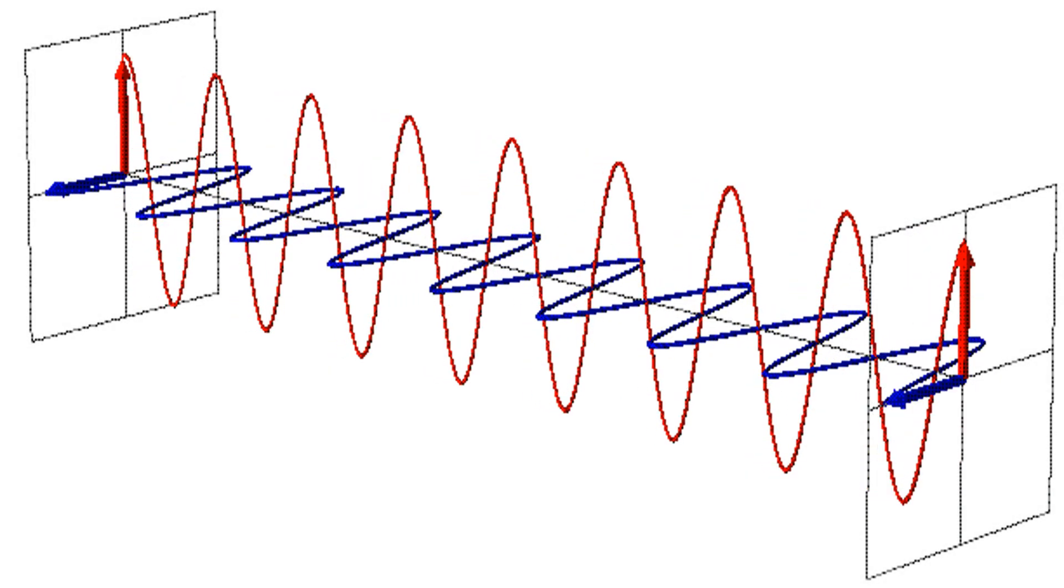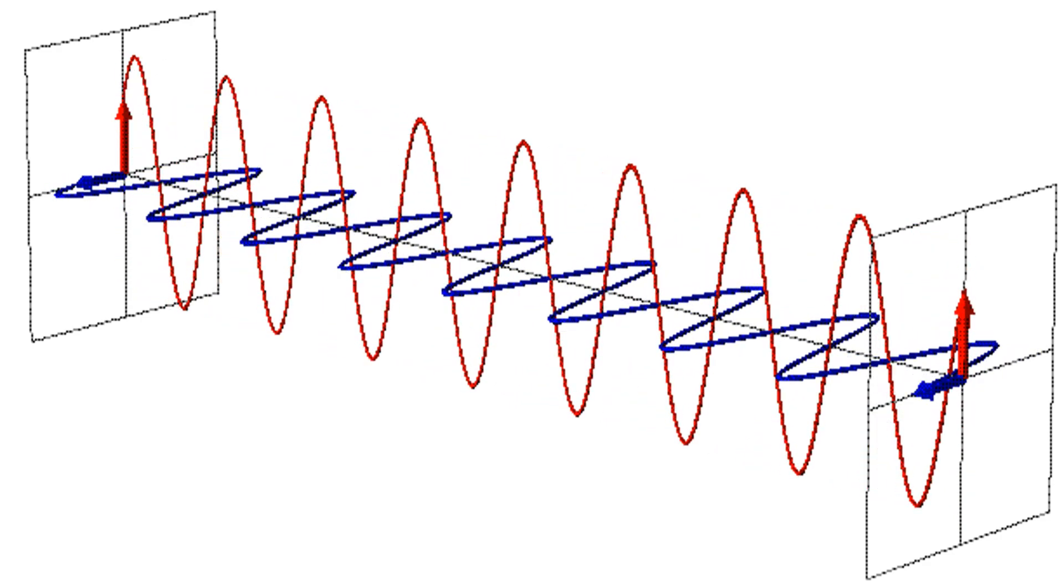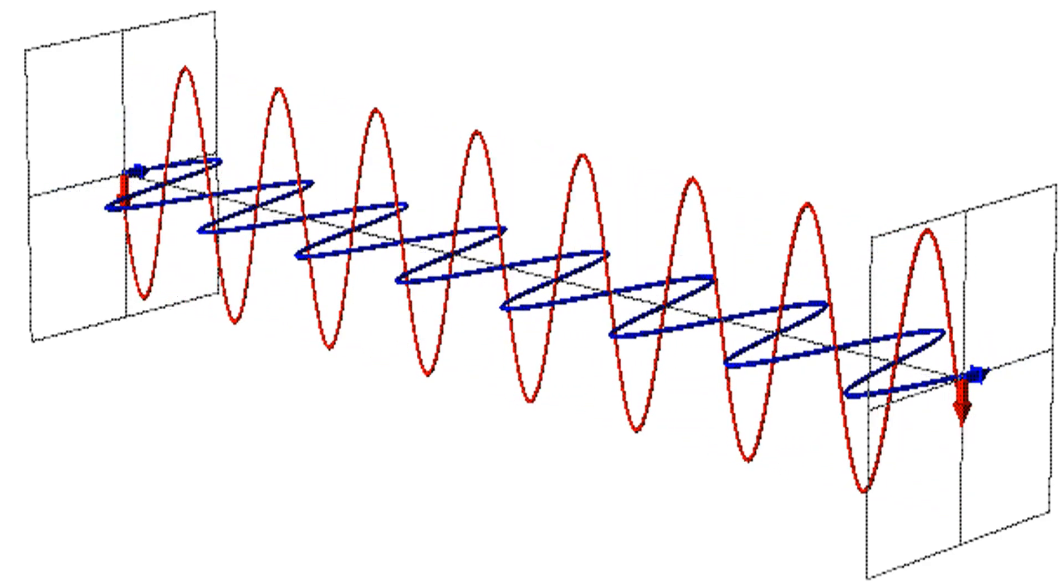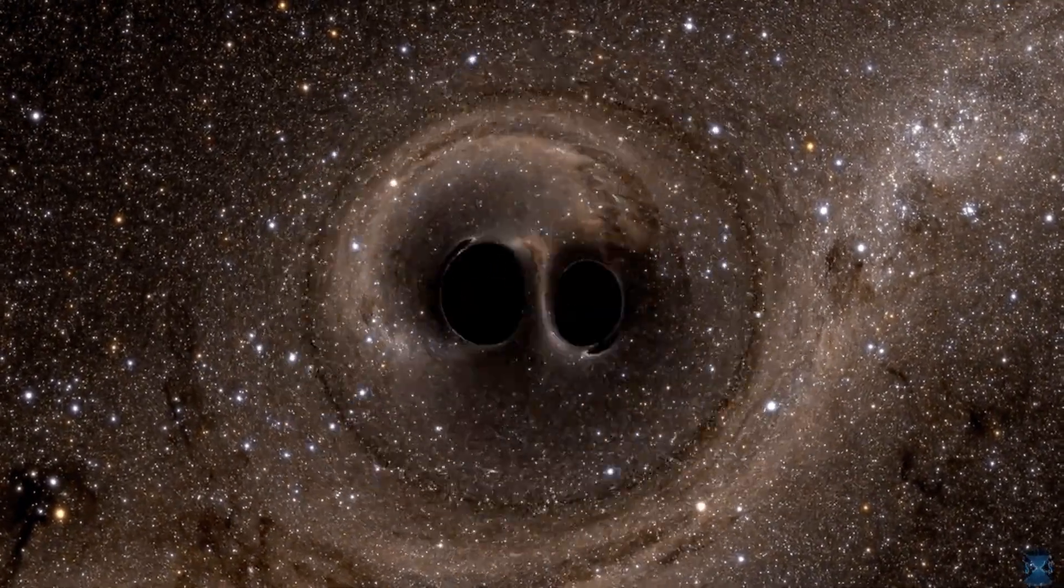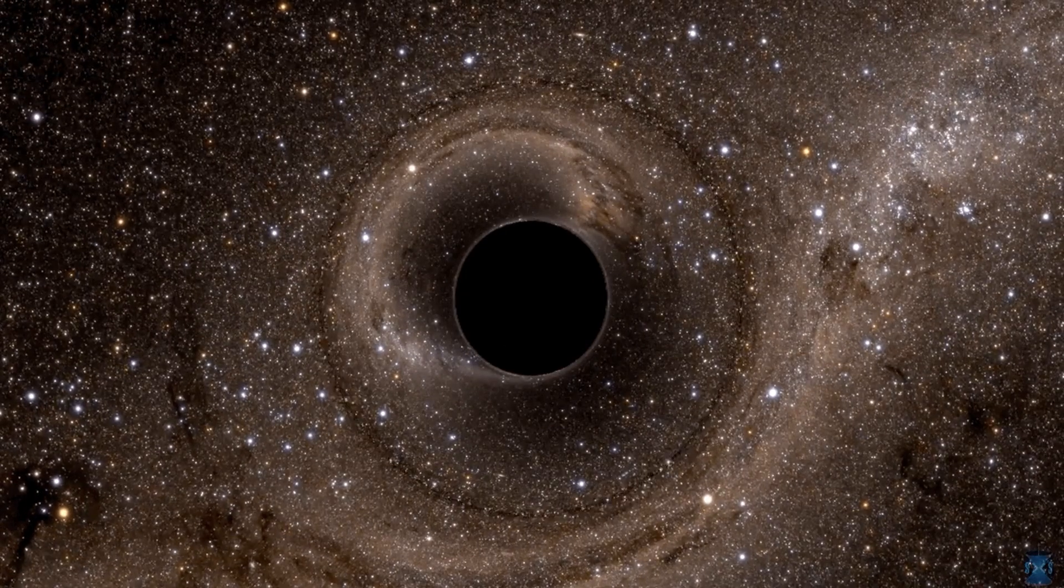Now that we understand what gravitoelectric and gravitomagnetic fields are, and how they resemble electric and magnetic fields, let's talk about gravitational waves. General relativity shows that gravitational waves travel at the speed of light, c. And we see this speed in the Maxwell's equations.